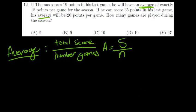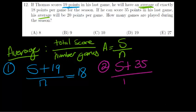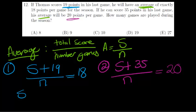We've got two scenarios. In scenario 1, he has an existing score and he's going to add 19 to that. Over the same number of games, he will have 18 points as an average. In scenario 2, he has an existing score plus 35, over the same number of games, giving an average of 20 points. So: S plus 19 equals 18N, and S plus 35 equals 20N.